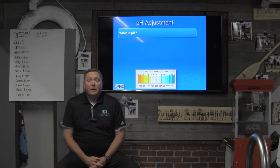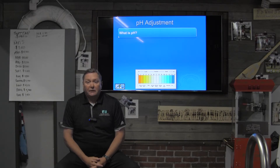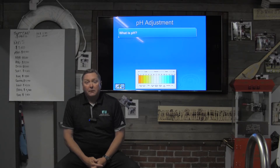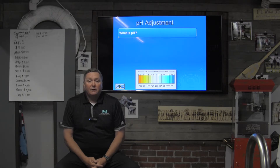pH in our water is the single most influential factor of the saturation index, which we all know is important — not only for our pool shells and our pool equipment, but for the bathers we introduce into the water. A pH that is extremely high, over 8, can be very uncomfortable to the bather's eyes and skin.